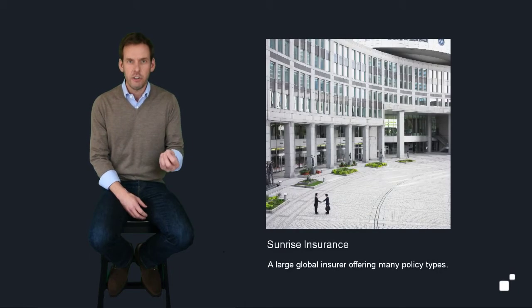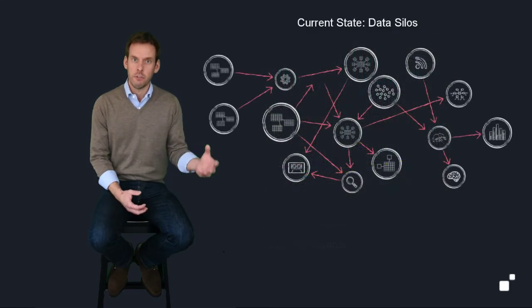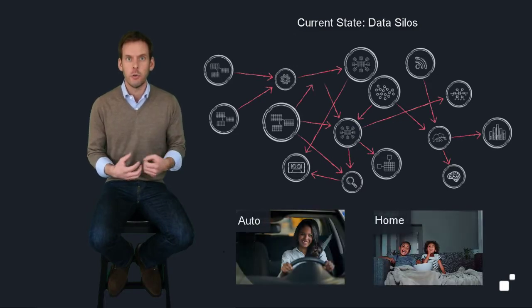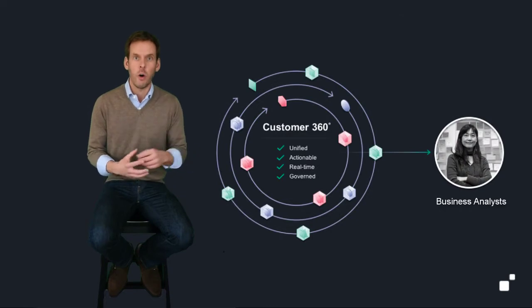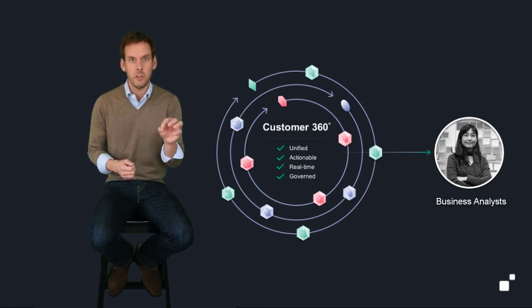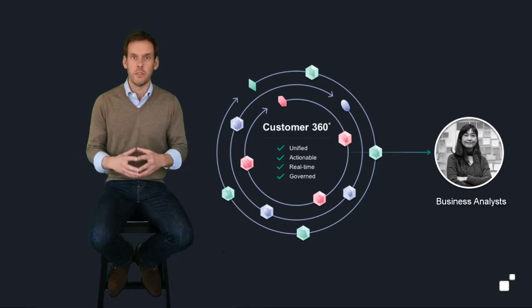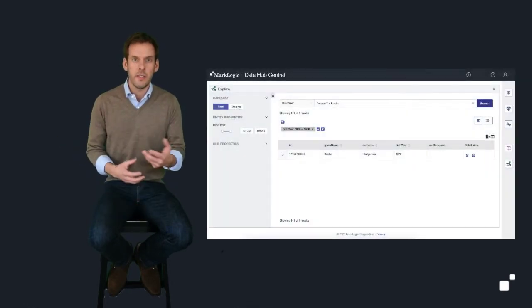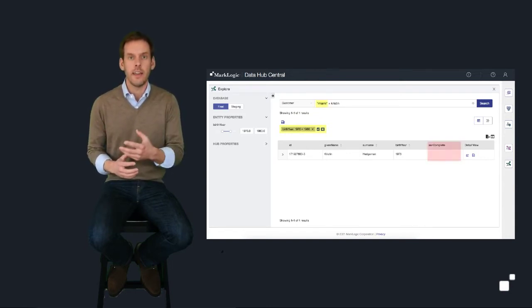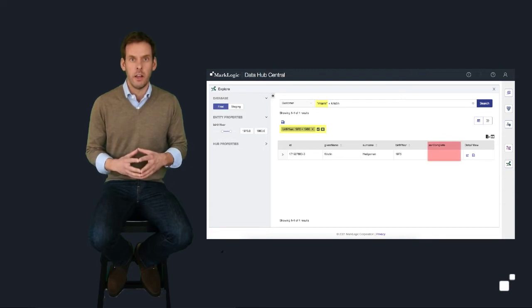Let's start by imagining that we work for Sunrise Insurance, a fictitious insurance company. Sunrise has all sorts of customer data across different systems for different policy types. Our challenge is to enable business analysts to query across all that customer data so they can do the analysis they need to make decisions and get an integrated customer view across all those different systems and policy types. You'll need to be able to query on things like age of the customer and location, all while adhering to security and data governance policy.